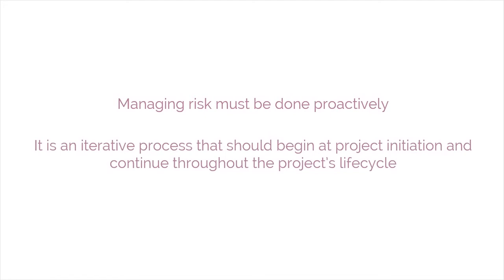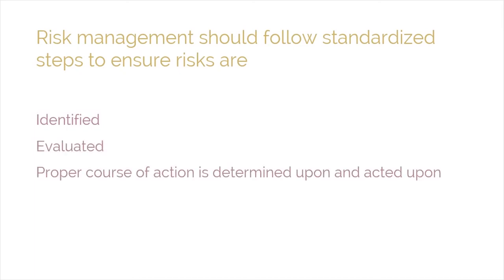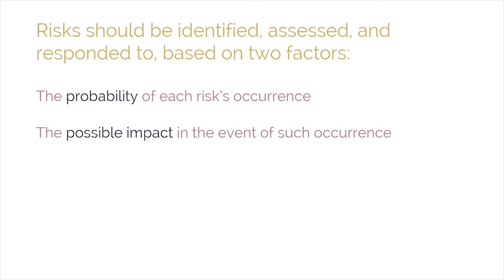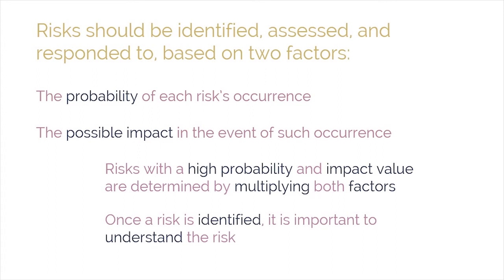Managing risk must be done proactively. It is an iterative process that should begin at project initiation and continue throughout the project's lifecycle. The process of managing risks should follow standardized steps to ensure that risks are identified, evaluated, and that a proper course of action is determined and acted upon. Risks should be identified, assessed, and responded to on the basis of two factors: the probability of each risk's occurrence and the possible impact in the event of such an occurrence. Risks with a high probability and impact value — determined by multiplying both factors — should be addressed before those with a relatively lower value. Once a risk is identified, it is important to understand it with regard to the probable causes and the potential effects if the risk occurs.